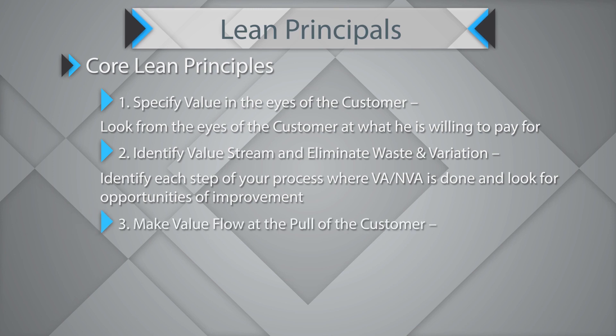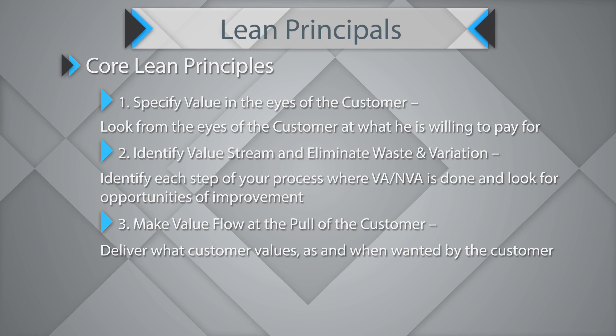The third principle is to make value flow at the pull of the customer. You must look at delivering what the customer values as and when wanted. Look at the value stream and try to reduce or remove the non-value-adding activities, reduce or remove waste, and look at opportunities for reduction of variation in the system. Anything that does not add value to the customer must be critically reviewed and removed. In your pursuit, look at pulling the process — making to customer order instead of making to inventory — and try to manage single-piece flow instead of batch processing.